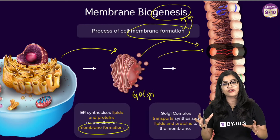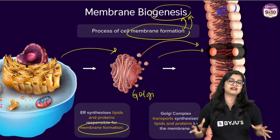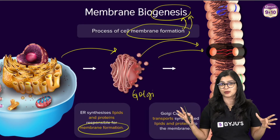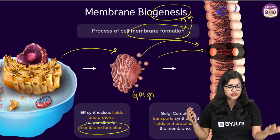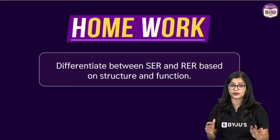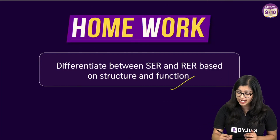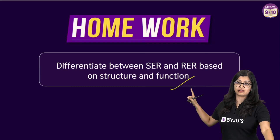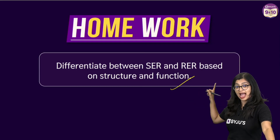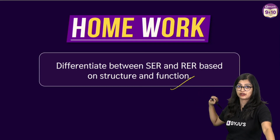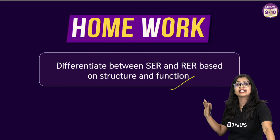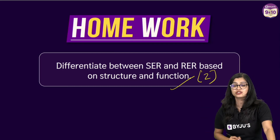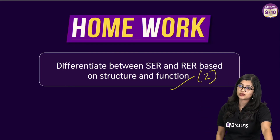In just under 10 minutes we have learnt all about the endoplasmic reticulum. Here's a quick homework question: differentiate between SER and RER — that is smooth endoplasmic reticulum and rough endoplasmic reticulum — based on structure and function, and write two points each.